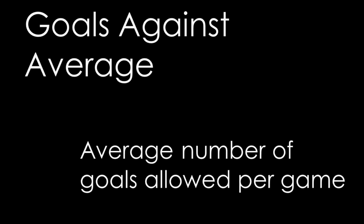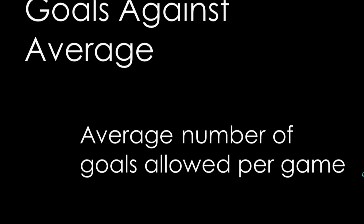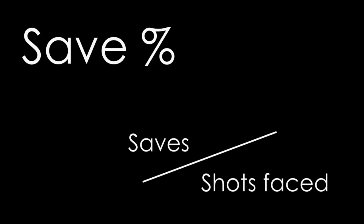This is why we have the stat of save percentage, which is simply the number of saves made divided by the number of shots that goalie has faced. Most goalies will want to be saving over 90% of the shots they face, or have a save percentage of .900 as it is written out, usually to 3 decimal places. If you drop too far below that, you might not find yourself between the pipes for very much longer.